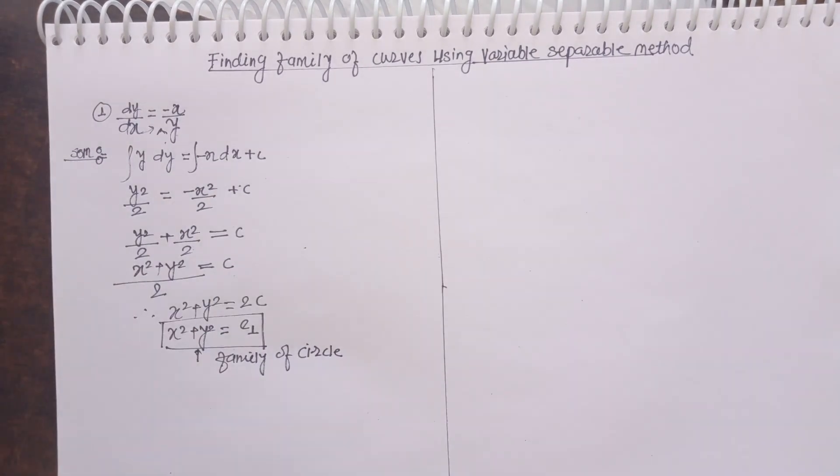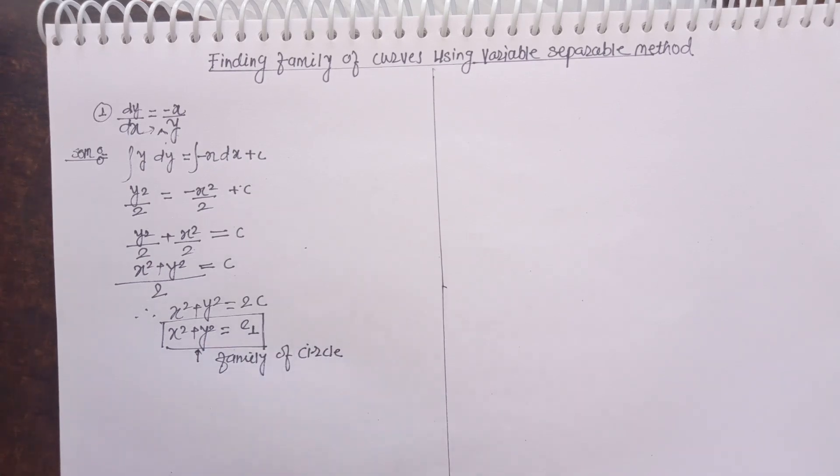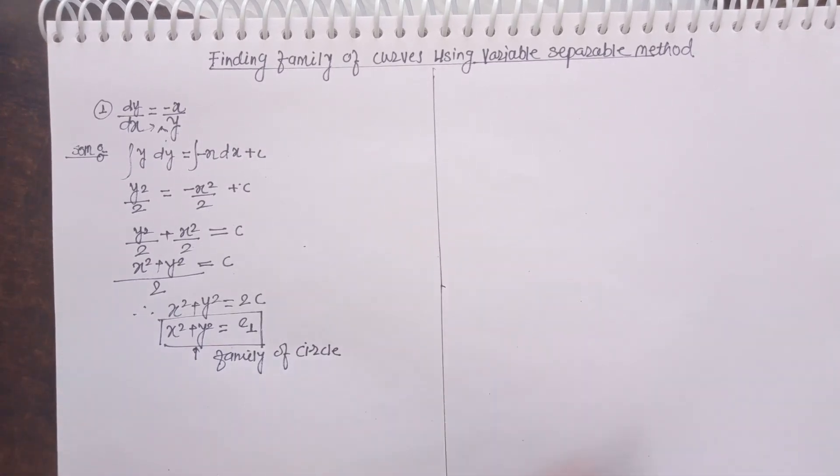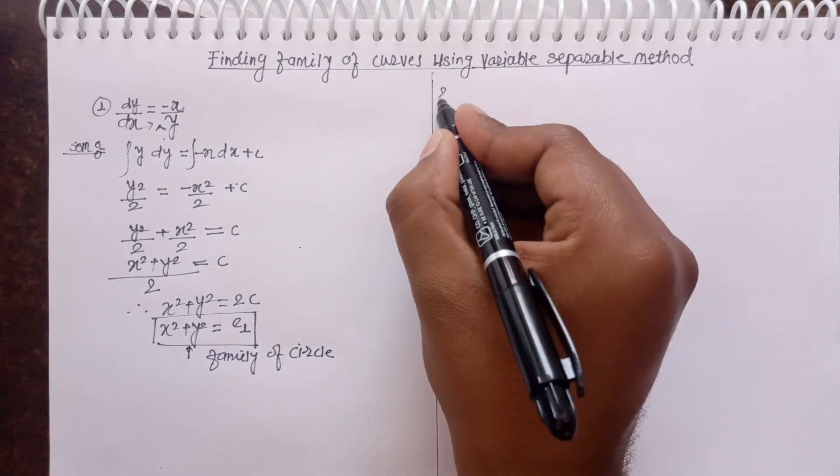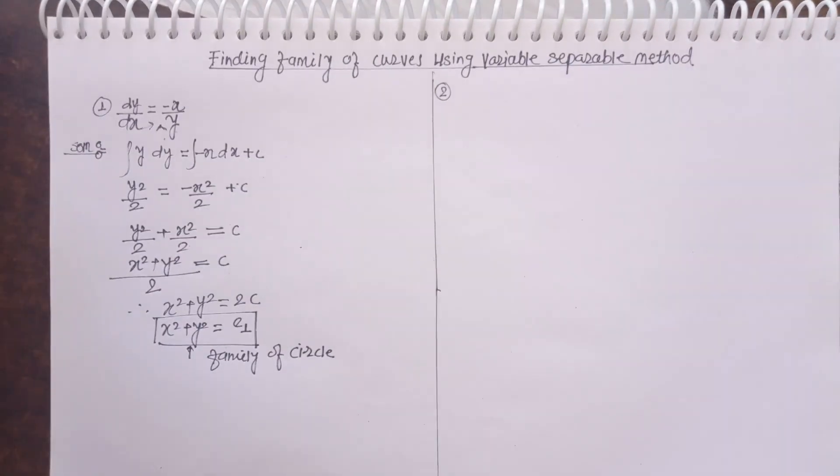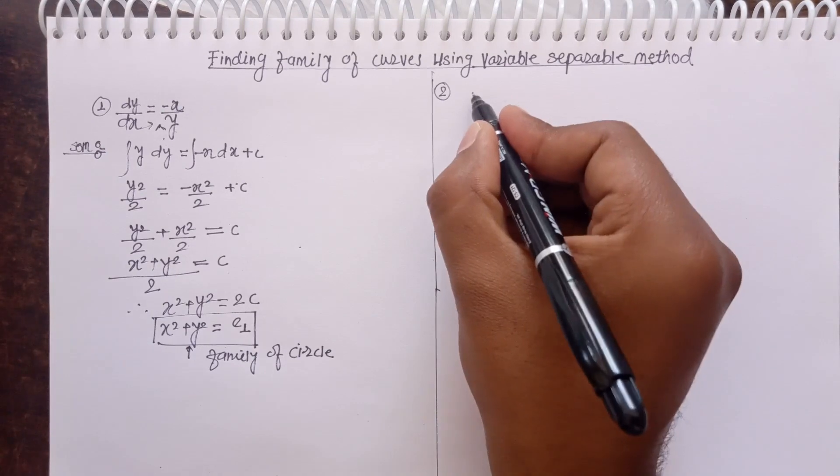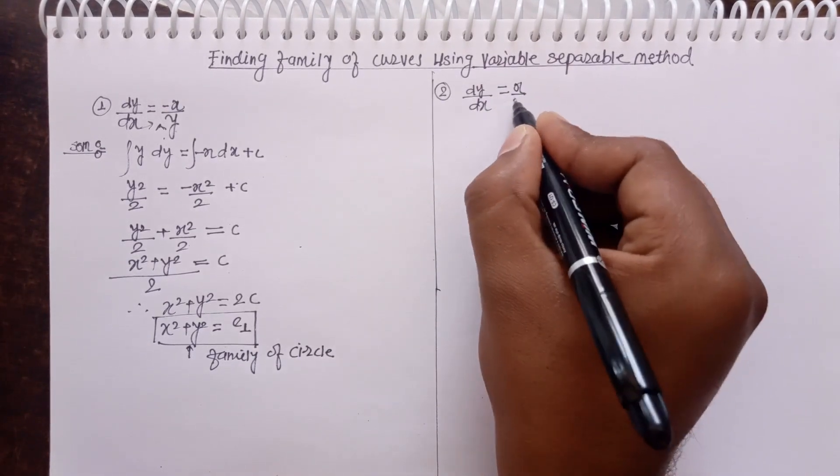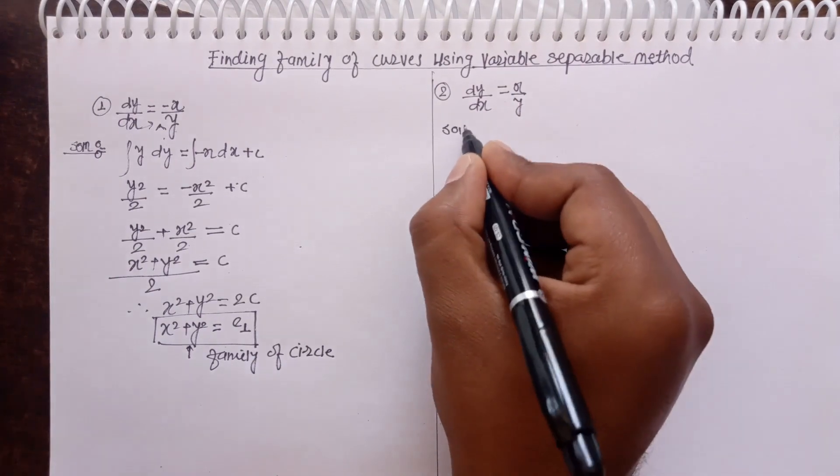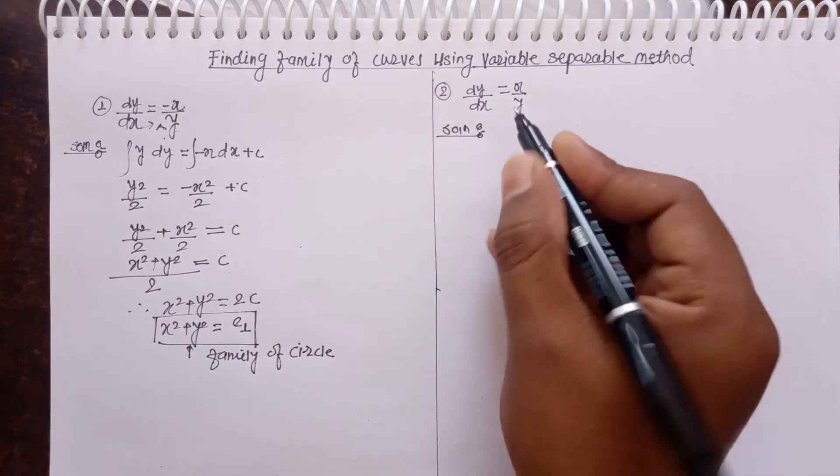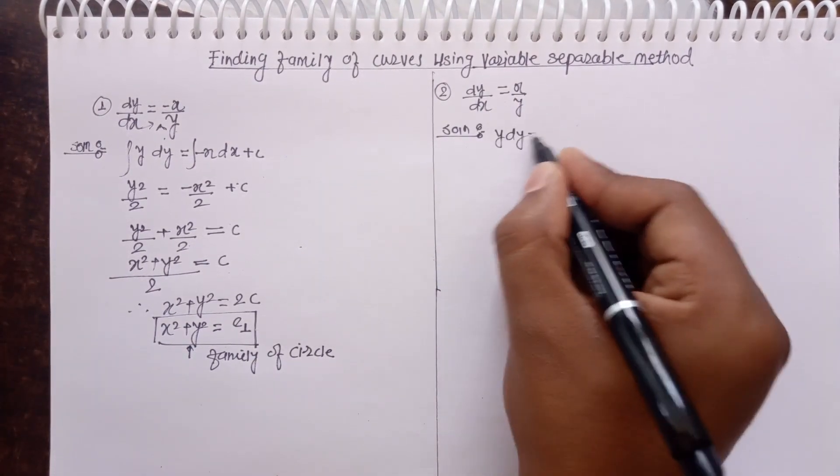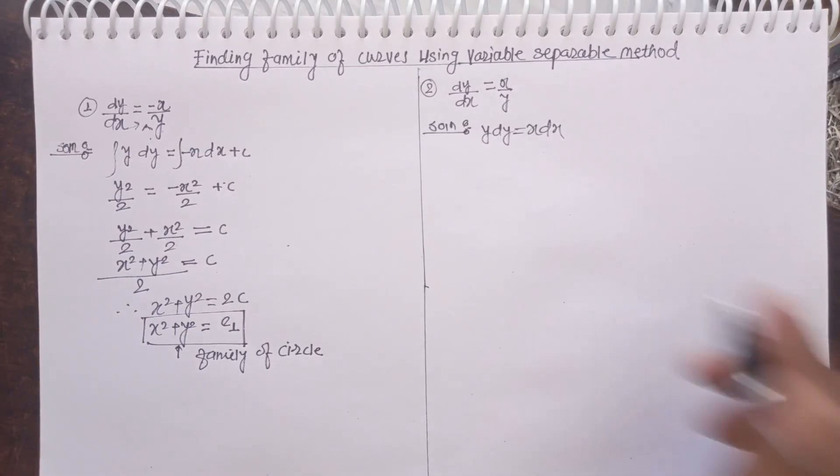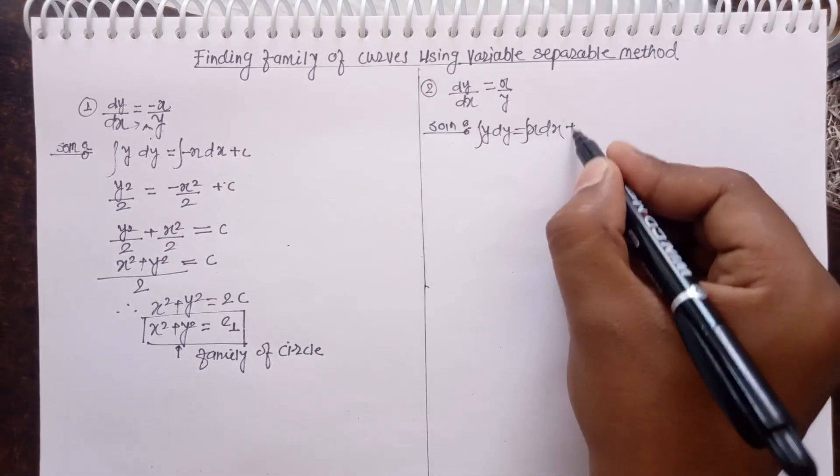The headline is finding family of curves using a variable separable method. Now take the second problem. Second problem, dy by dx equals to x by y. In this problem also, we can separate easily. Variable separable y into dy equals to x into dx. Variable gets separated.